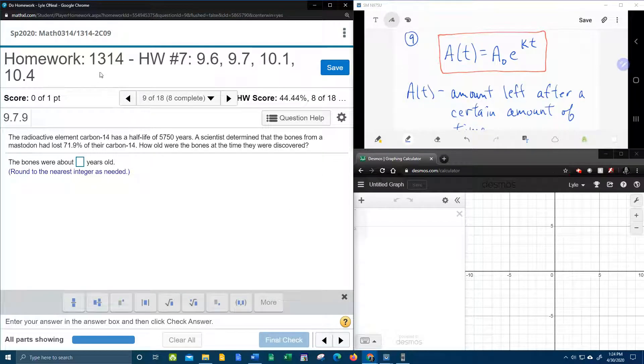Alright, here we go. Question number nine from our College Algebra Homework Number 7 in MyLabMath. We have an application problem, also known as a word problem. It says the radioactive element carbon-14 has a half-life of 5,750 years. And just so you know, the half-life is the time that it takes to get rid of half of the stuff. So in 5,750 years, however much carbon-14 we started with, we will have gotten rid of half of it. A scientist determined that the bones from a mastodon had lost 71.9% of their carbon-14. How old were the bones?